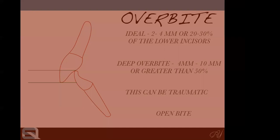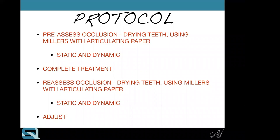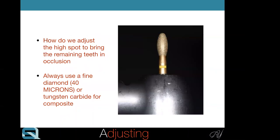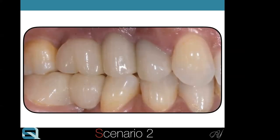For a restoration assessment: first dry the teeth and use millers with articulating paper. Ask the patient to bite, tap, tap, tap, and slide their jaw. Do the treatment. Once done, dry the teeth again and reassess the occlusion — static and dynamic — then adjust. When adjusting a high spot, if you are using 40-micron paper, use a 40-micron diamond burr — this has a yellow band. The diamond grit in the burr is 40 microns, meaning each pass takes away 40 microns. You're being very precise and conservative.